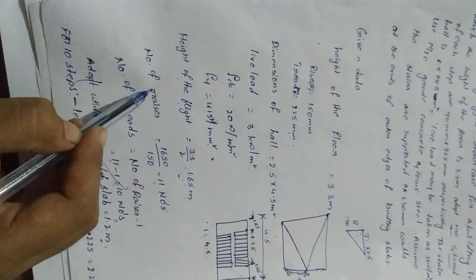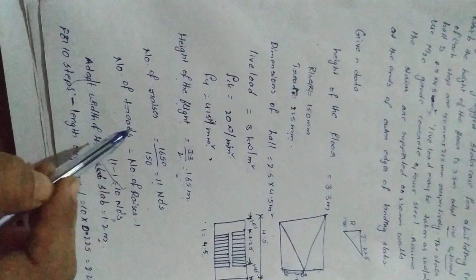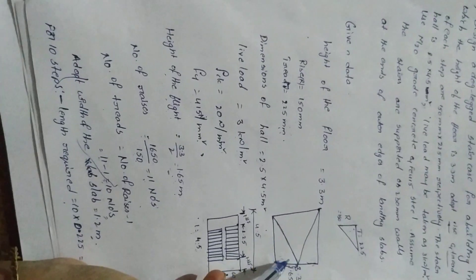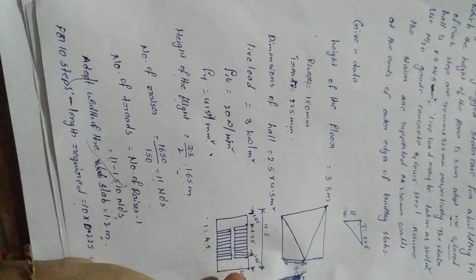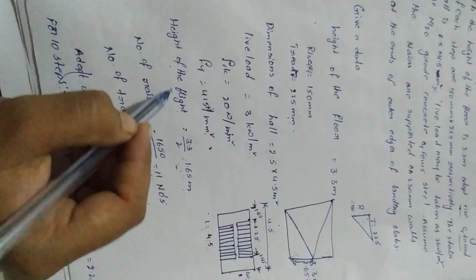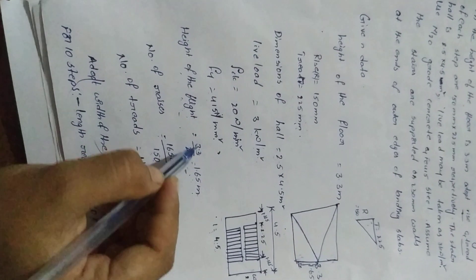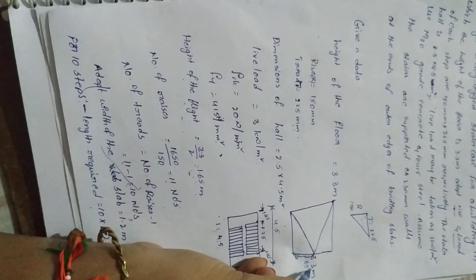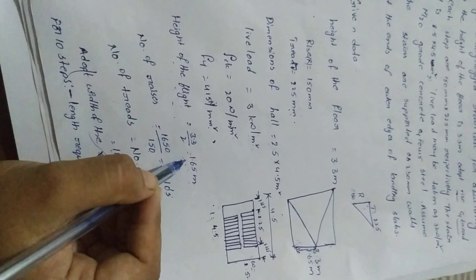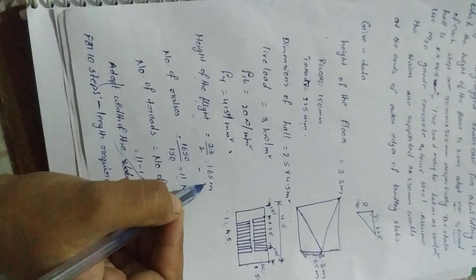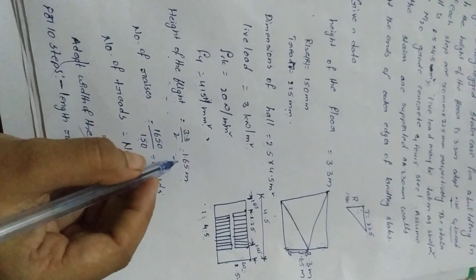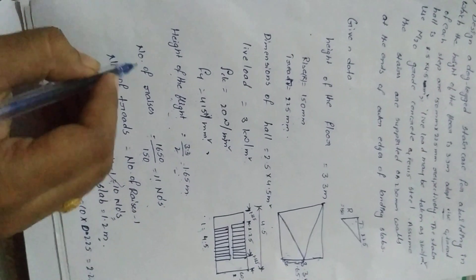Next we calculate the number of rises and threads. First we calculate the height of the flight. The staircase hall is divided into two equal flights, so height of flight equals 3.3 divided by 2, which gives 1.65 meters. This value is used to calculate the number of rises.